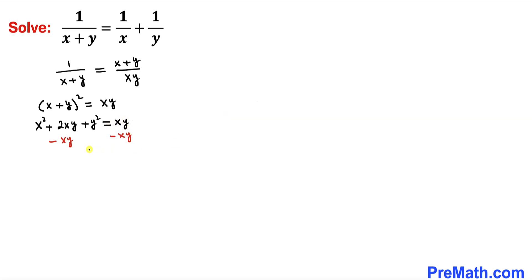Now let's subtract x times y from both sides. The right hand side goes to zero, and our left hand side becomes x squared plus xy plus y squared equals 0.